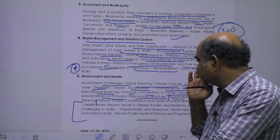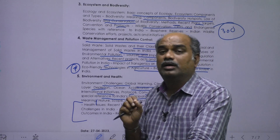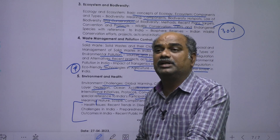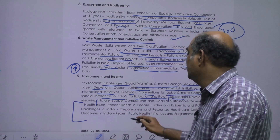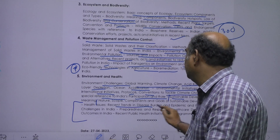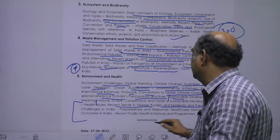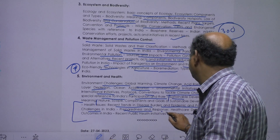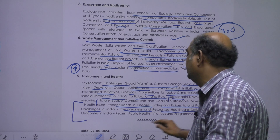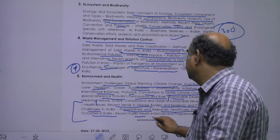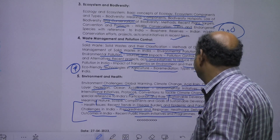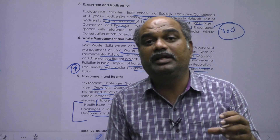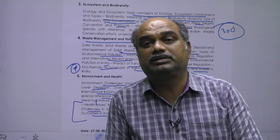In the environmental health segment: recent trends in disease burden, epidemics and pandemic challenges in India, preparedness and response, healthcare delivery and outcomes in India, and recent public health initiatives and programs are the main important things.